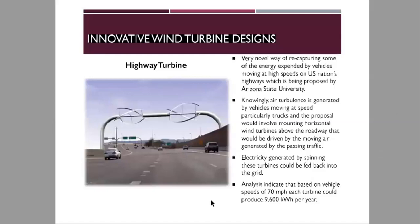Another innovative design is the highway turbine, which operates using the wind generated by the speed of passing cars. Analysis indicates that based on vehicle speeds of 70 miles per hour, each turbine could produce 9,600 kilowatt-hours per year. This is a creative concept sponsored by Arizona State University, though it is not yet widely commercially available.